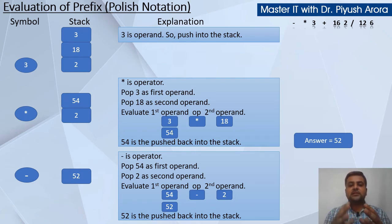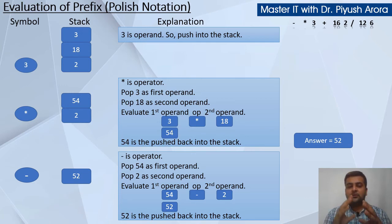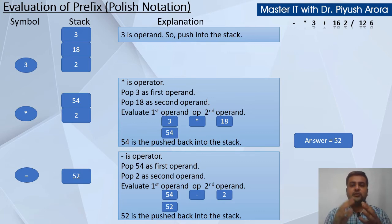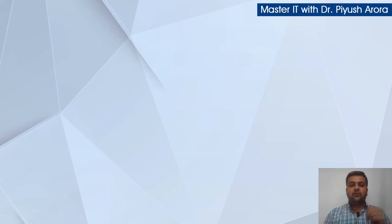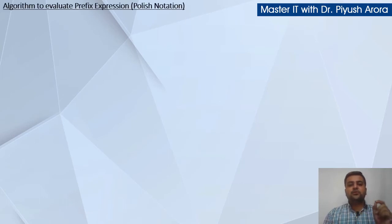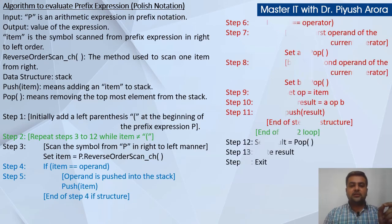Is tarah se hum kisi bhi prefix expression ko evaluate yani ki solve kar sakte hain. Toh prefix expression ko evaluate karne ke liye jo steps abhi humne dekhe, in steps ko algorithmic steps yani ki pseudo code ke form mein humein kis tarah se likhna hai — let us see. Algorithm to evaluate the prefix expression, yani ki Polish notation — this is the algorithm, jiske andar total 14 steps hain.